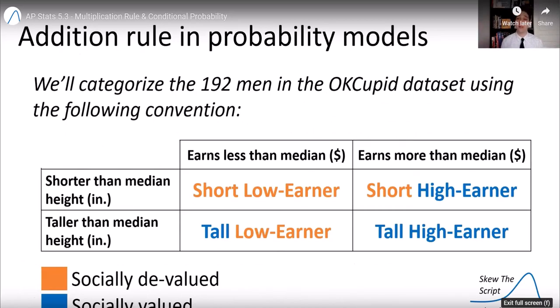And we categorized the men as follows. The profiles either fell into short low earner, so they're below median height, below median income; short high earner, below median height, above median income; etc. in those categories.